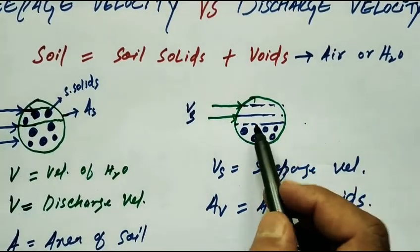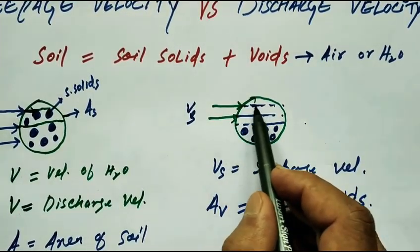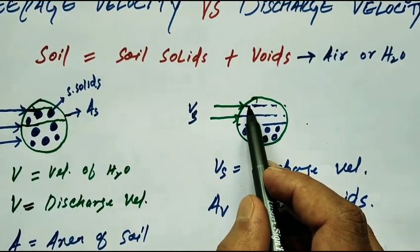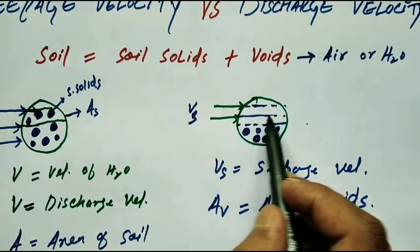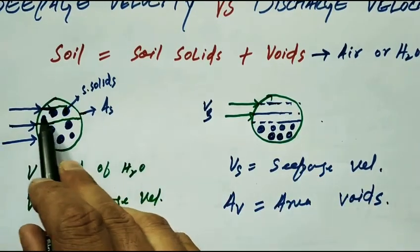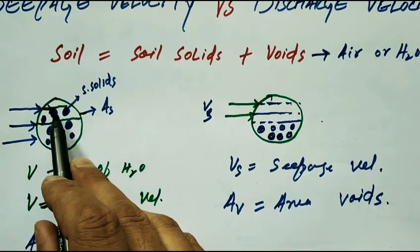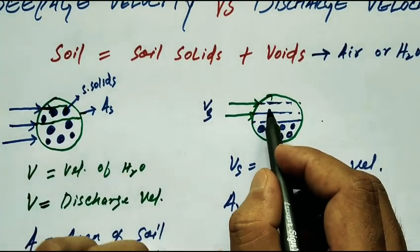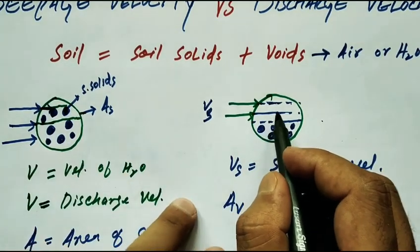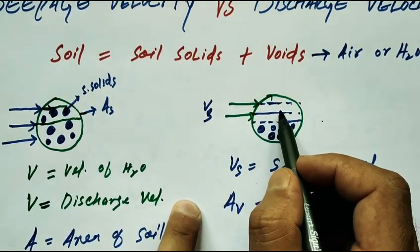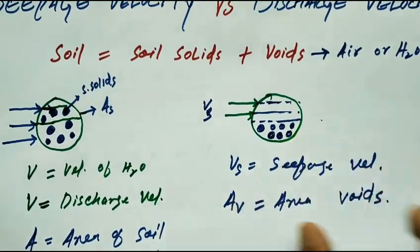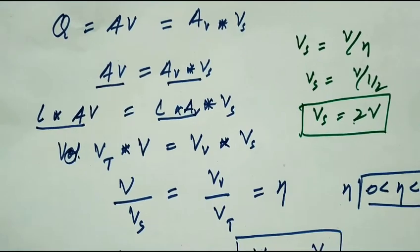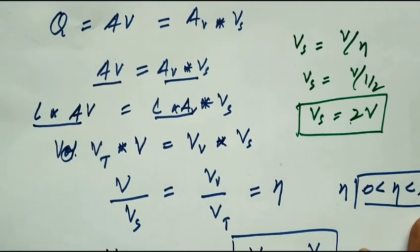Looking at the figure: fluid flows very fast — seepage velocity is high — when there are no restrainments in the void-only path. In the actual soil sample, there are restrictions to the flow of liquid from soil solids, so velocity is reduced — that is the discharge velocity. So that is why seepage velocity is always greater than discharge velocity.